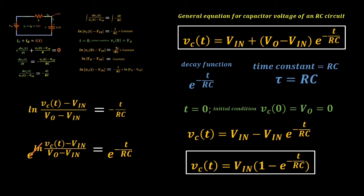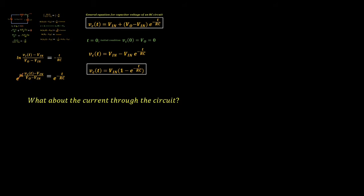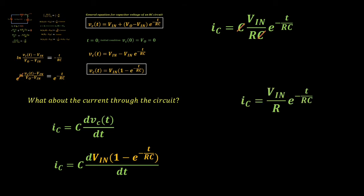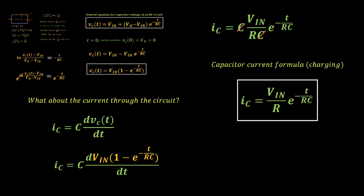Given the formula for the capacitor with initial conditions equal to zero, we can use that equation to derive the current for the capacitor, simply by using the capacitor current formula IC is equal to C dV/dT. By taking the derivative of the capacitor voltage, we will now have the current equation for the capacitor, which is equal to V over R multiplied with E to the negative T all over RC. Now that we have both the formula for the output voltage and the output current given the RC circuit, let us now observe how the RC circuit responds to a step input and see the plots of current and voltage waveforms.